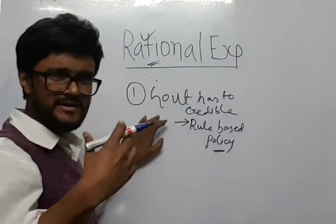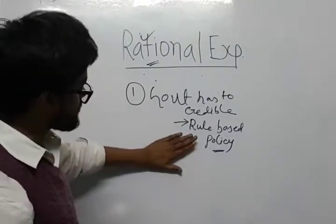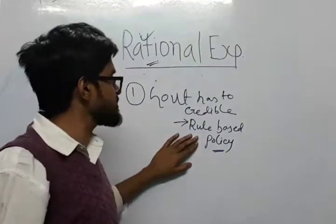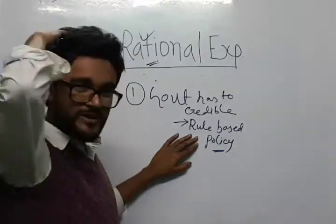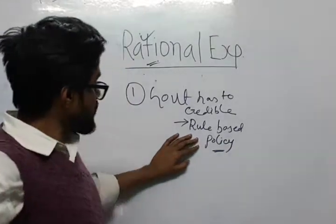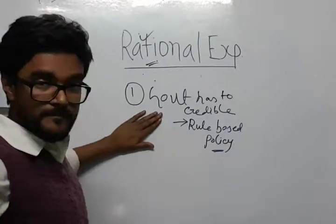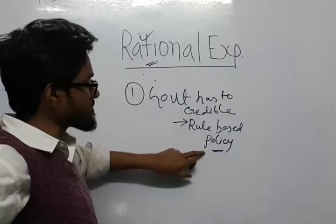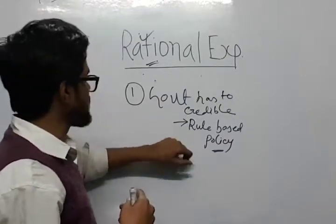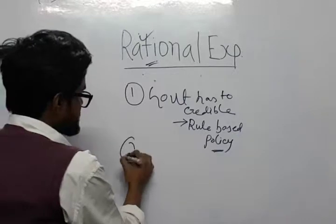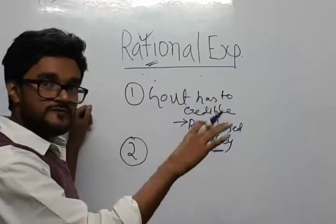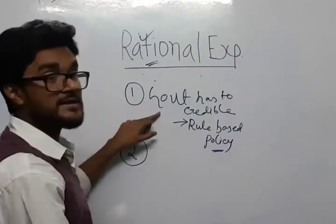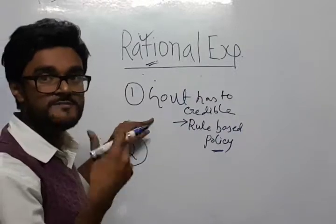Later on, people like Kydland and Prescott also explained this with their model — that why discretionary monetary policy is not very effective; rather, it leads to inconsistency. The second prerequisite is that the people living in the country — whether it is producers or consumers — they have to take this announcement into account while forming their expectation.